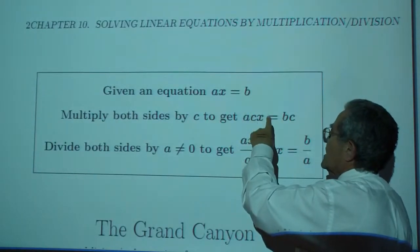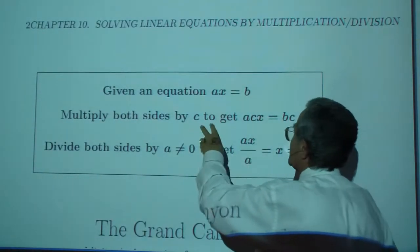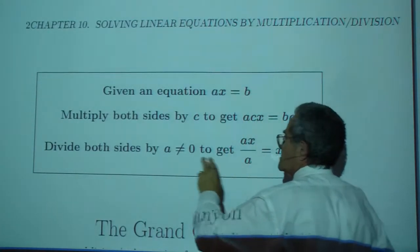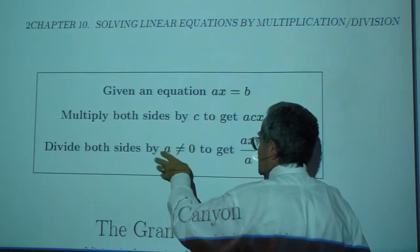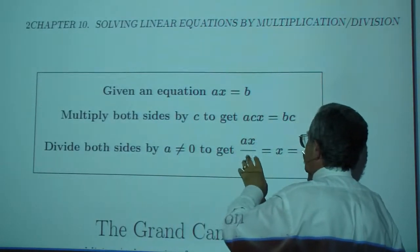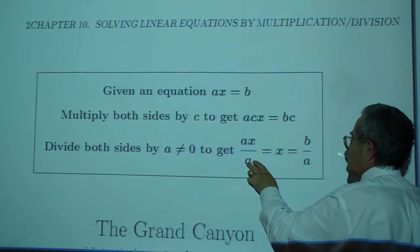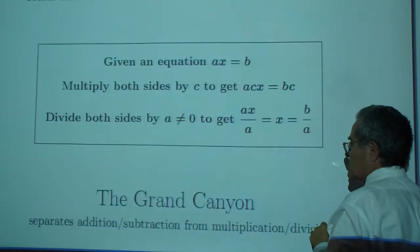So given an equation AX equals B, multiply both sides by C such that ACX equals BC. Divide both sides by A, as long as A is not zero, to get AX over A equals B over A, and AX over A is just X.